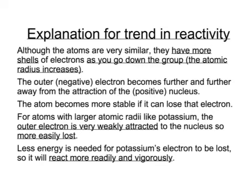So as you go down the group, the atom becomes larger. There are more shells of electrons. This outer electron becomes further and further away from the attraction of the positive nucleus.